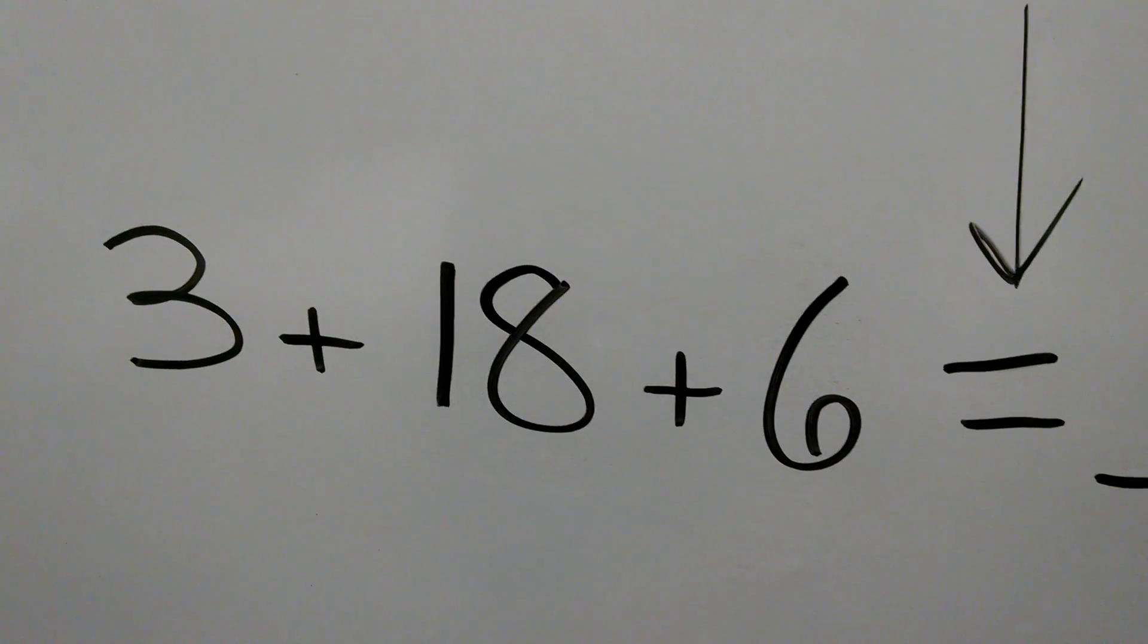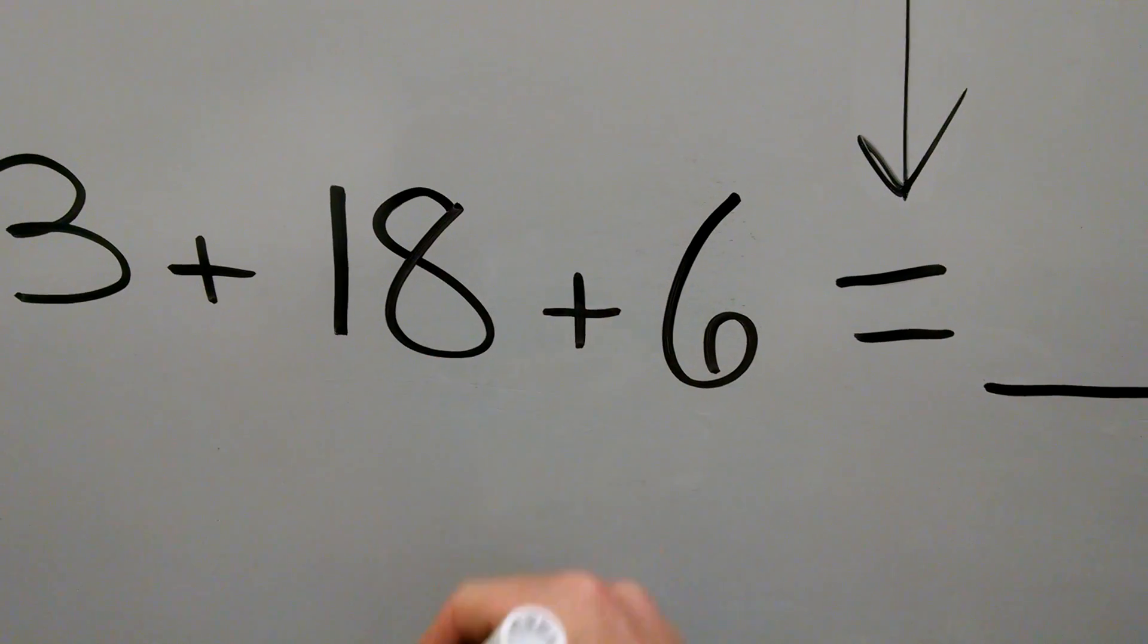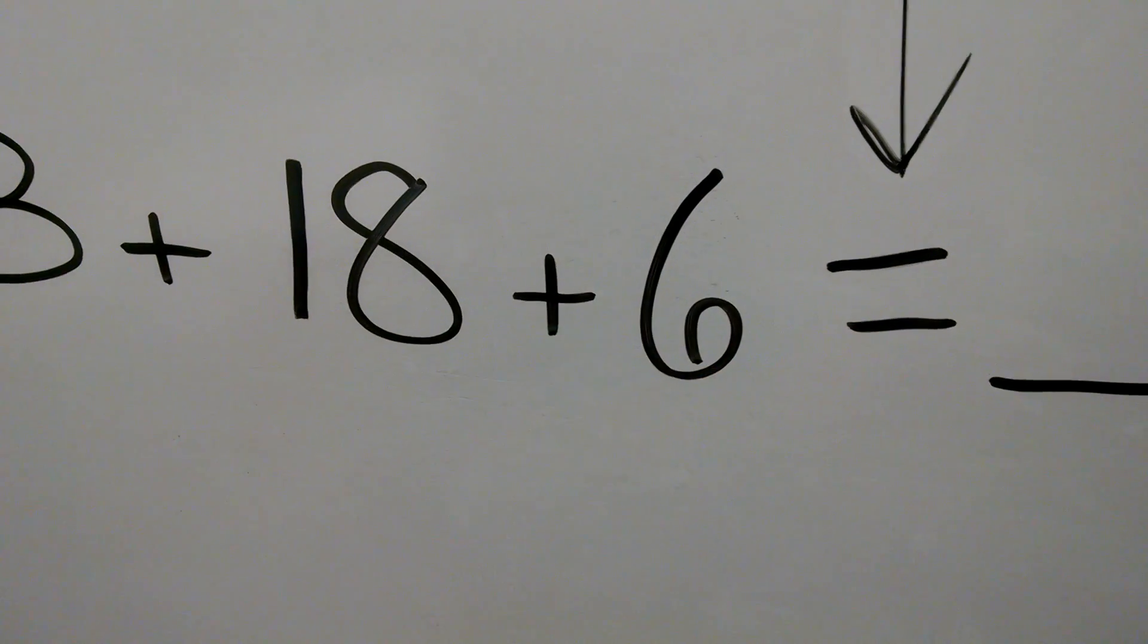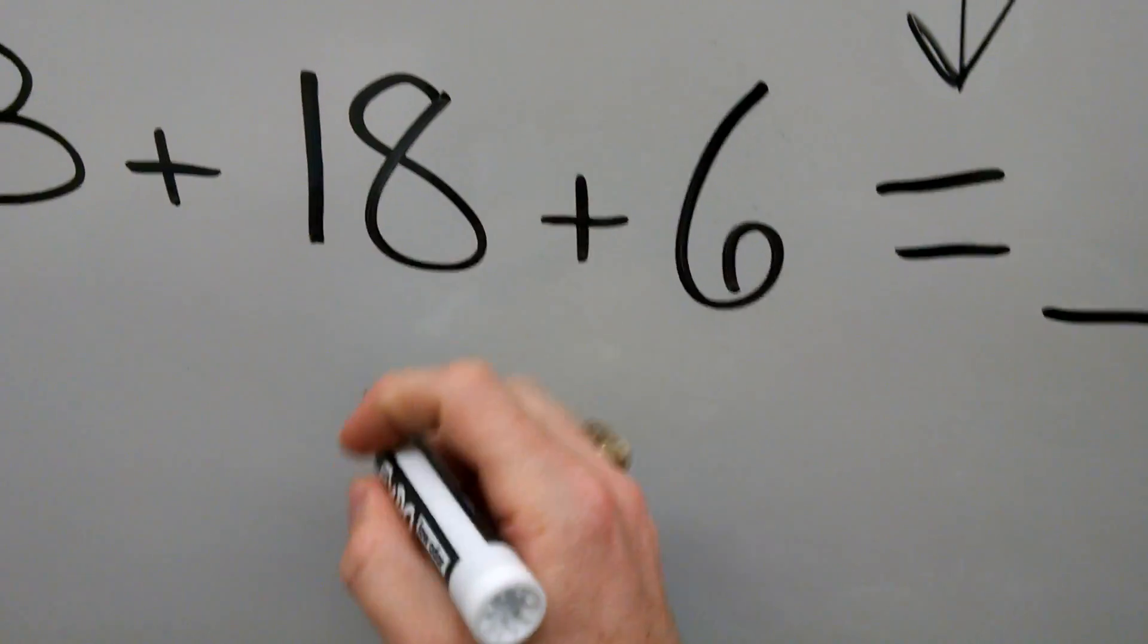I know that 6 and 3 gives me 9. And I know that 18, and if I count up 9 more, that gives me 27.